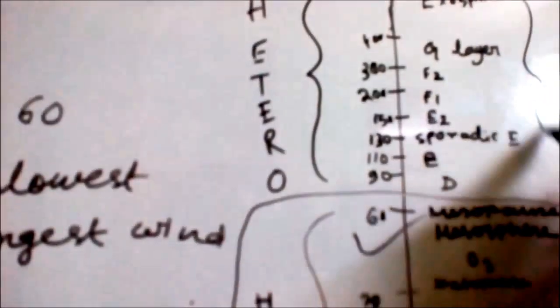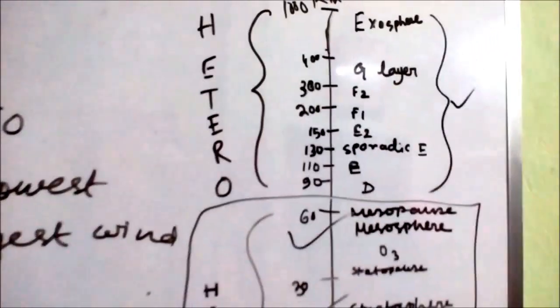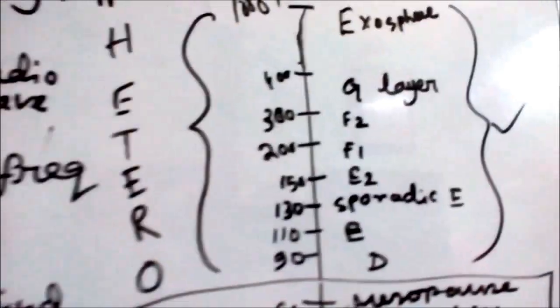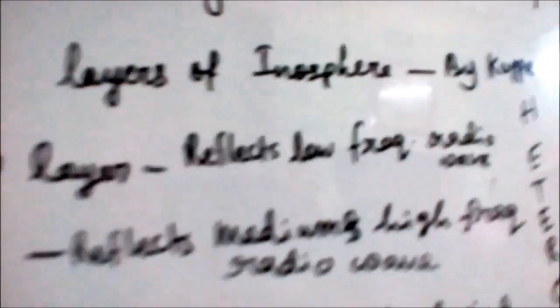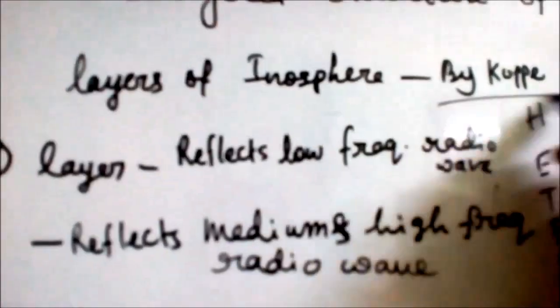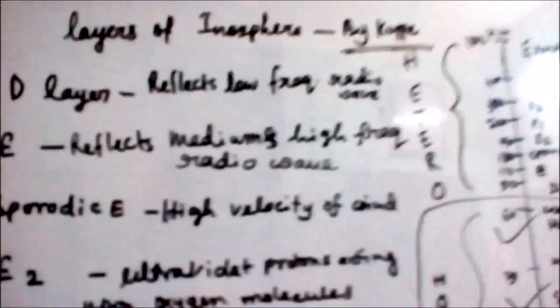We have now studied the homosphere — troposphere, stratosphere, and mesosphere. Now we will look at the upper air layer structure, which is the heterosphere. According to Peterson, above the mesopause is the ionosphere. The ionosphere has been classified into layers. The first one is the D layer, which extends from the mesopause to 90 km. The D layer's important characteristic is that it reflects low frequency radio waves.